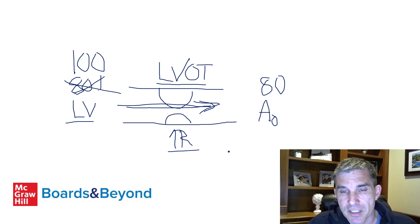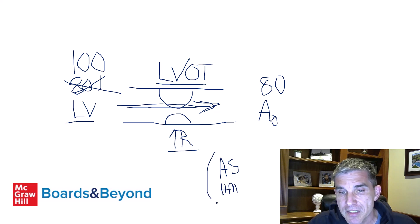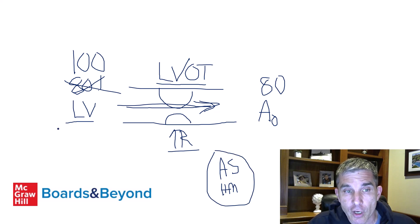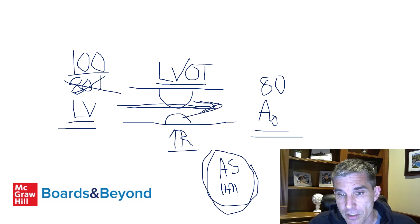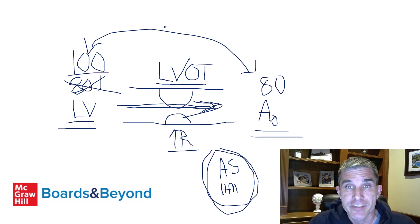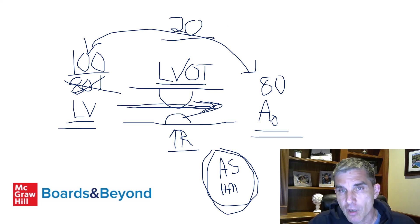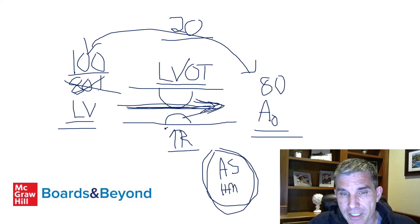There are two disease processes that cause this: aortic stenosis and obstructive forms of hypertrophic cardiomyopathy. In both, it is difficult for blood to flow from the left ventricle to the aorta, so the left ventricle generates substantially higher pressure. This creates a significant pressure gradient between the LV and aorta — something like 20, 30, or 40 mmHg — which is necessary to move blood through the high-resistance left ventricular outflow tract.